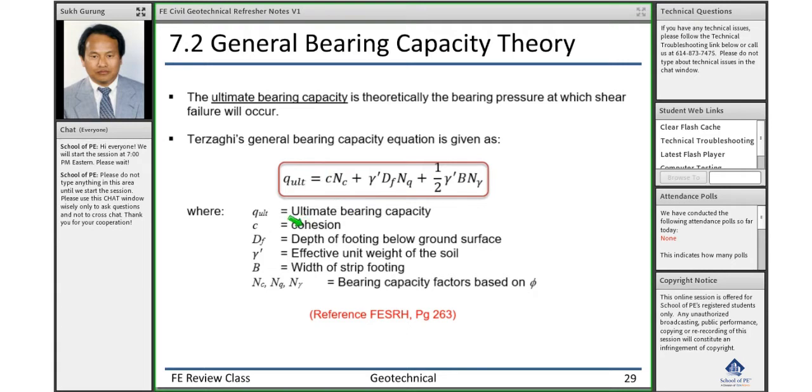We talked about cohesion yesterday when dealing with the Mohr-Coulomb failure criteria. DF is your depth of the footing below the ground surface or below the existing grade. Gamma dash is your effective unit weight of the soil.